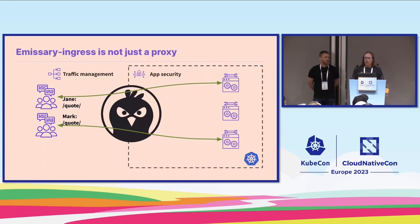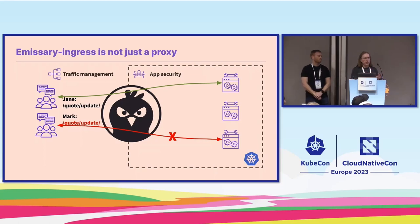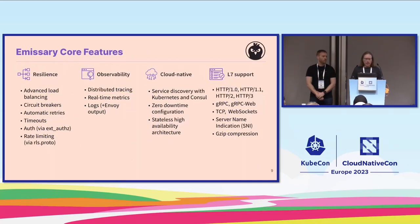API gateways are not just proxies — they get to do a bunch of other things. App security is a big one: maybe Jane is allowed to update a quote, but Mark is not. Emissary gives you a place where you can put that functionality in one place, manage it for everybody, and not have to worry about all of your application developers getting it right every time. There's also observability, rate limiting, resilience features, and things that make it easier to develop your apps.